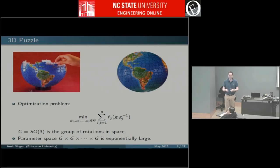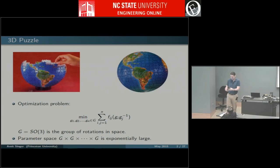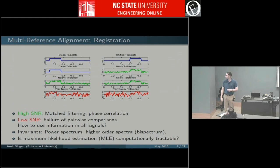When we solve puzzles, we look for pairs of pieces that fit well together and build from there — we don't search the entire configuration space. This works because pieces have different colors and clear fits. But with other datasets I'll show you shortly, there is no such clear cut, and you'd really like to search the entire space.